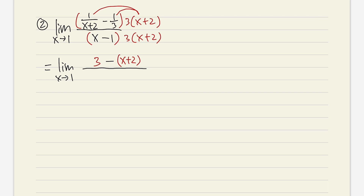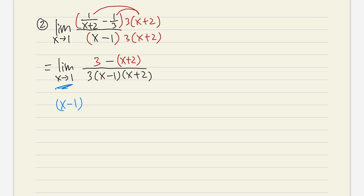Here's a secret: the reason we multiply by the lowest common denominator was to fix the top, so we are not going to multiply out the bottom — just keep it. Now, a very common mistake students make is seeing x plus 2 on top and x plus 2 on the bottom and canceling them. We cannot do that, because on the top we still need to work out 3 minus (x plus 2). Another secret: when we have a 0 over 0 case with x approaching 1, you can expect the factor x minus 1 to cancel. If x approaches 17, you'd expect x minus 17 to cancel.